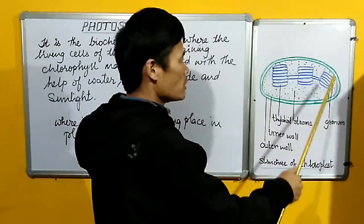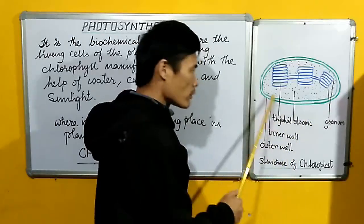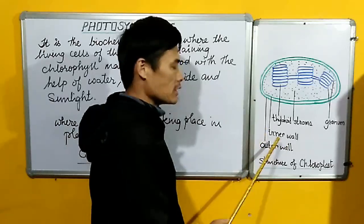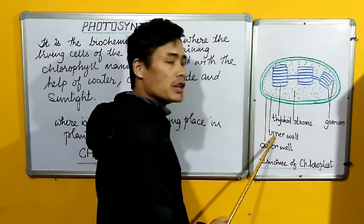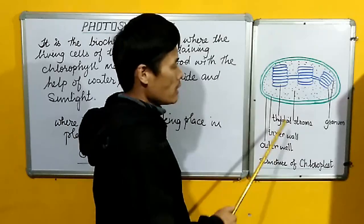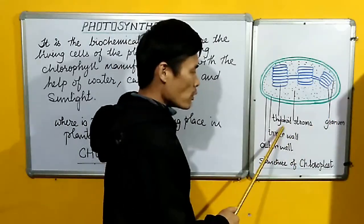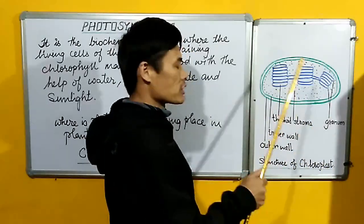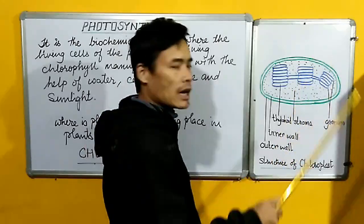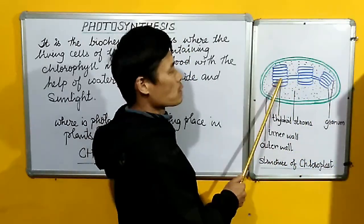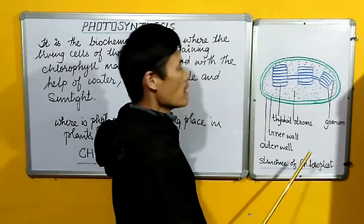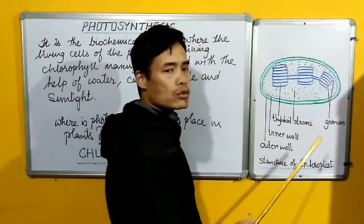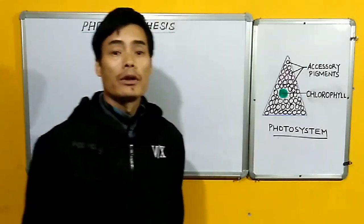In gist, the overall structure of the chloroplast has two membranes — an inner wall and outer wall — and the granum which is composed of thylakoid. The granum appears like stacks of coins placed one on top of the other. The light reaction takes place in the granum and the dark reaction takes place in the stroma.